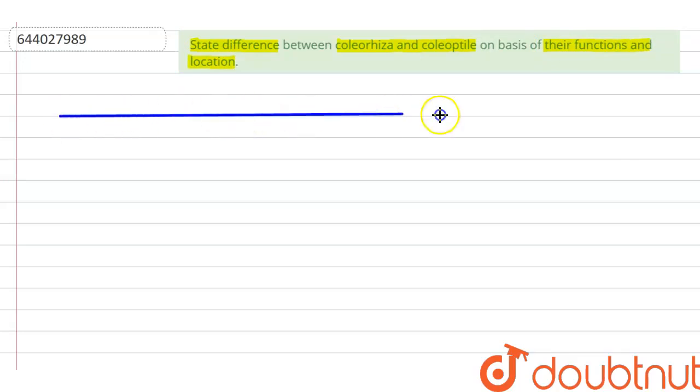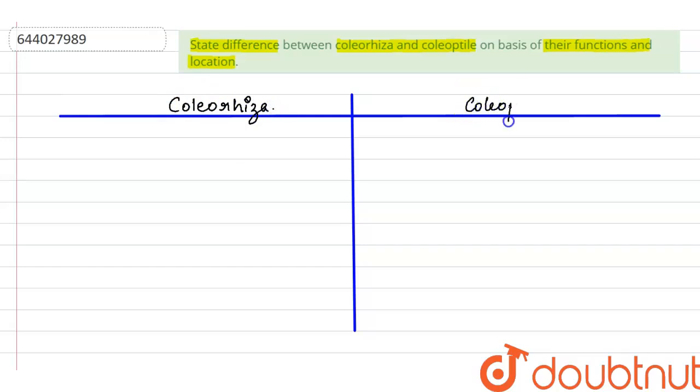So if we take coleoptyle and coleorhiza, we have to state difference. So on left side, I will be writing points on coleorhiza. On right side, it will be coleoptyle part.